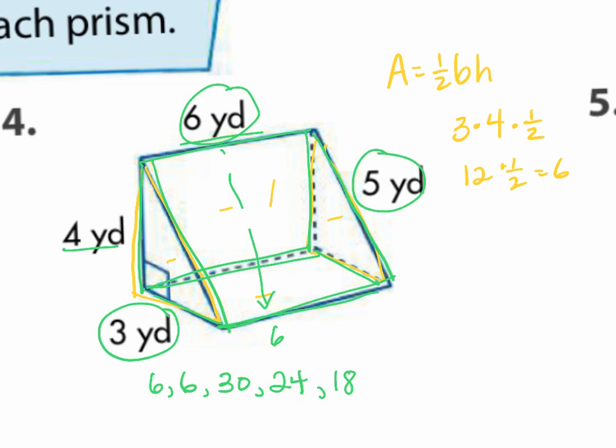I need to make sure I have five numbers. I'm going to add them all up. So when I add up those five sides, we've got 84 square yards.